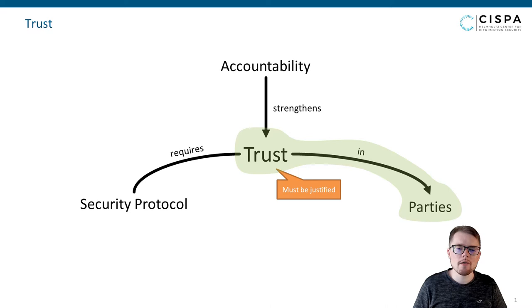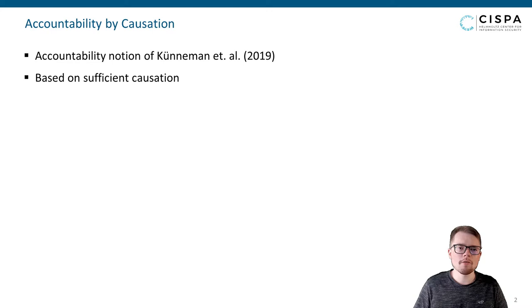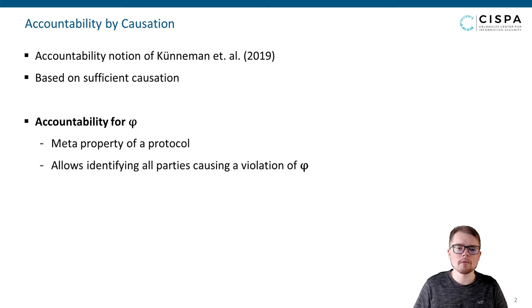In this work, we use the accountability notion of Kühnemann and co-workers, which is based on sufficient causation. Instead of trying to detect all dishonest parties, which is in general impossible, they focus on parties whose behavior is the actual cause of a violation. In this way, we understand accountability for a security property phi as a meta-property of a protocol allowing us to identify all parties that are causing a violation of phi.